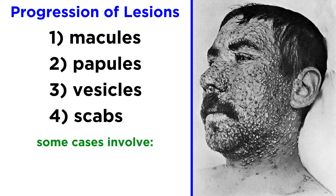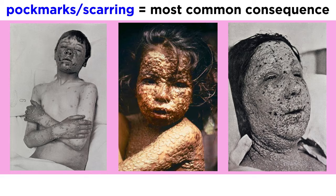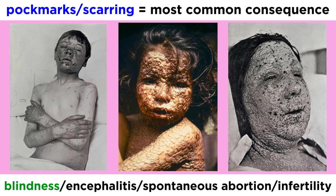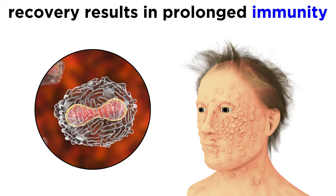Some cases also involve intense vomiting, diarrhea, and excessive bleeding. Pock marks and scarring, especially of the face, are the most common consequence from smallpox, but rare instances of blindness, encephalitis, spontaneous abortion, or infertility have also been reported.